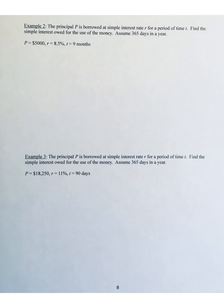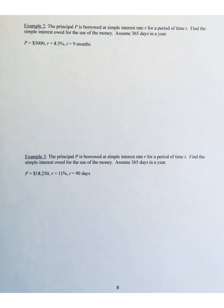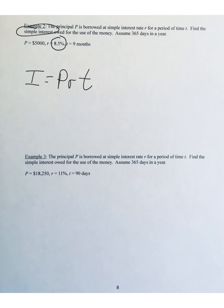Let's try another interest question for more practice. Looking at Example 2: the principal P is borrowed at simple interest rate R for a period of time T — find the simple interest owed. Assume 365 days in a year. P is $5,000, R is 8.5%, and T is nine months. We're going to use the simple interest formula I equals PRT, but first we check two items.